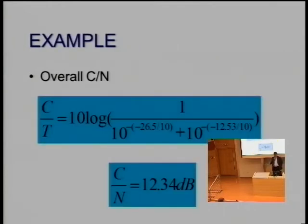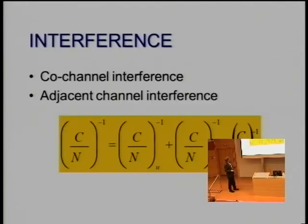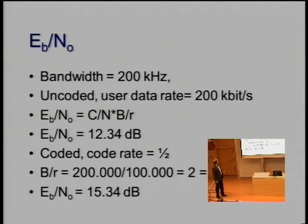Taking the figures: 26.5 dB signal to noise ratio on the uplink, 12.5 dB on the downlink. Because the uplink is so high, the combined signal to noise ratio is 12.3 dB. But there may also be co-channel or adjacent channel interference, so we have to take into account the C over I as well, depending on the environment. That can be a very limiting factor.